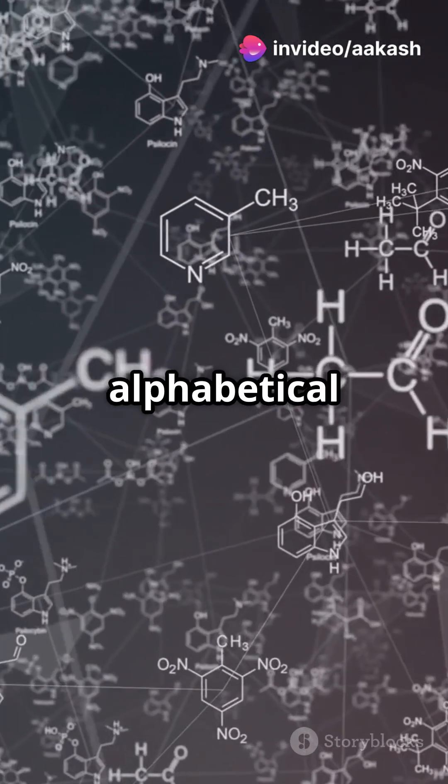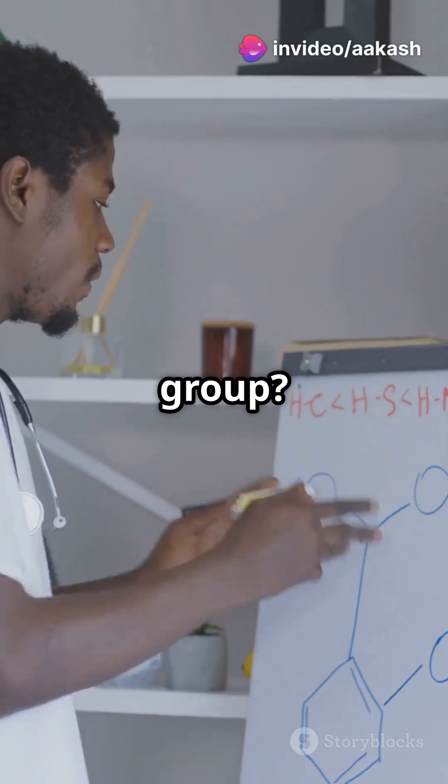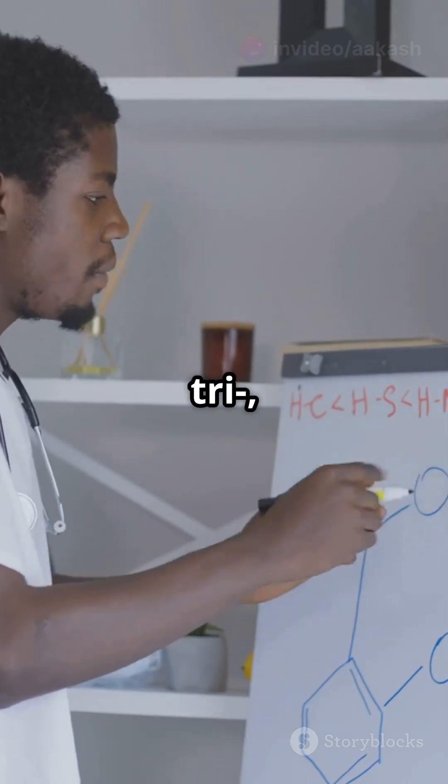Always use lowest possible numbers. List branches in alphabetical order. And if there's more than one of the same group, use prefixes, di, tri, tetra.